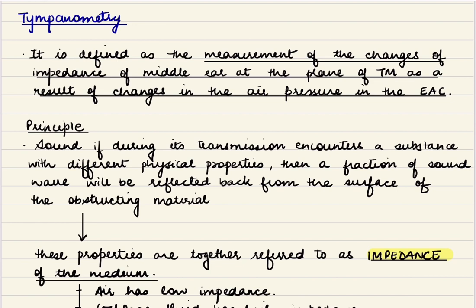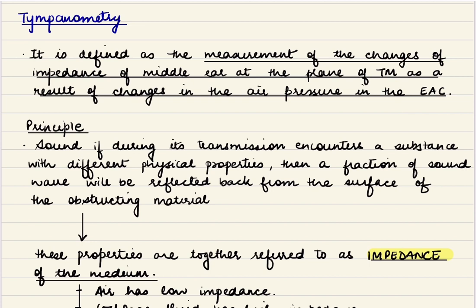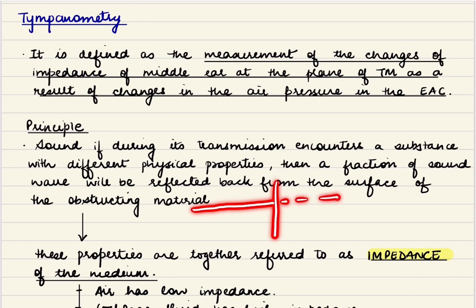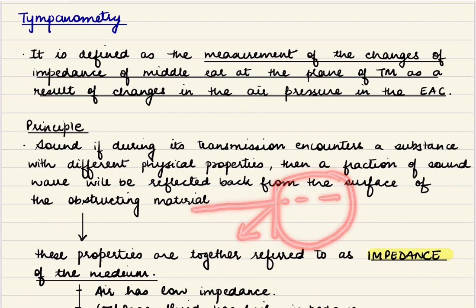The basic principle of tympanometry: if sound during its transmission encounters a substance with different physical properties, then a fraction of sound will be reflected back from the surface of that obstructing material. These properties are together known as the impedance of the medium. Simply put, when sound is traveling between two mediums, depending on the physical properties of the medium, some sound will be transmitted and some reflected back. These physical properties are known as impedance.